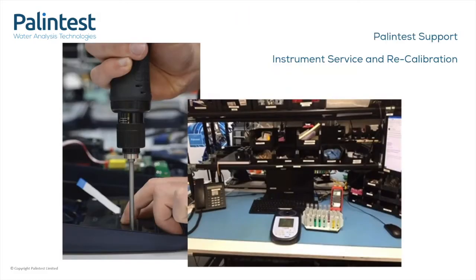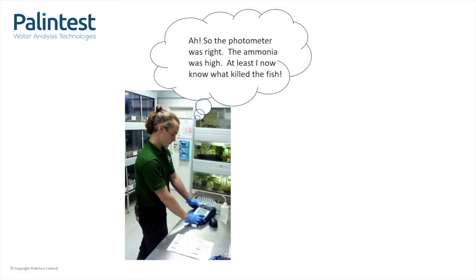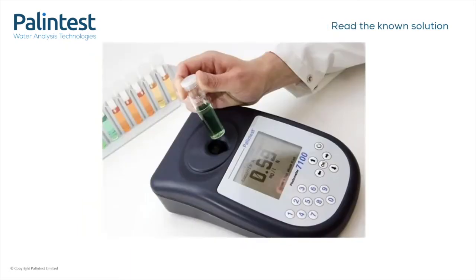Well, you could send your instrument back to us for a service and recalibration. But unless you have a backup — and let's face it, who does — you'll be without your instrument for a week. And when we send it back to you, if you are still getting those unexpected results that led to you having doubts, then you'll know that a week ago your photometer was fine, and those high readings really were high. You could instead prepare a known solution of whatever it is you are testing for. For example, if you are doing ammonia testing, you make up a one milligram per litre solution of ammonia. However, this is not an easy thing to do, and the result you get on your photometer may tell you how well your photometer is reading, or it may tell you how good you are at making up one milligram per litre solutions of ammonia.